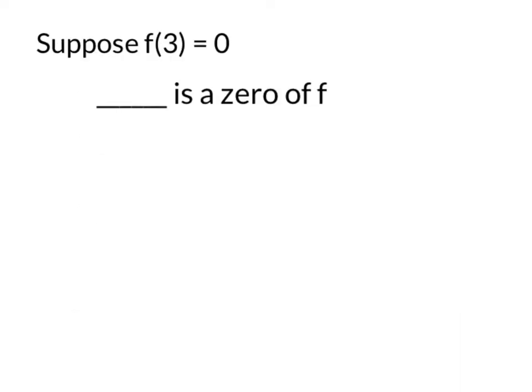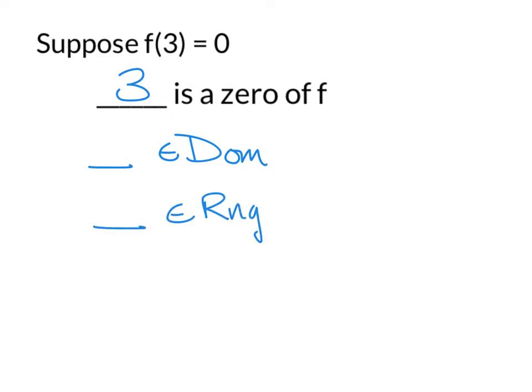Suppose that f of 3 is equal to 0. That's basically the definition of what a zero is — we would say that 3 is the zero of f, any value that makes a function equal to 0. We do know one element of the domain and one element of the range of f.